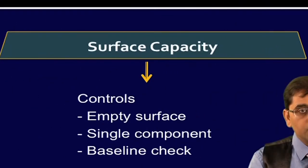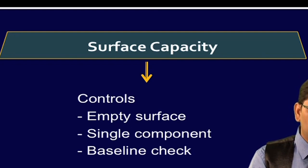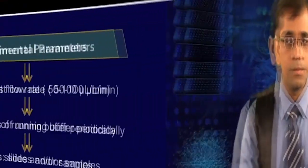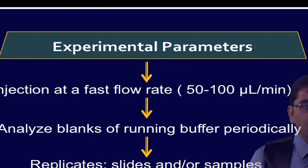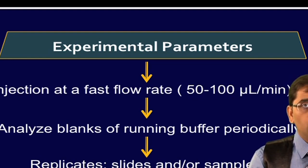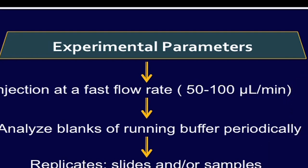Surface capacity is another important consideration: what kind of controls need to be used, what reference empty surface needs to be used, and single-component binding and baseline checks — all of these are important points to consider. Low ligand surface capacity is preferable in many cases, which can help in minimizing issues such as mass transport, aggregation, and steric hindrance. There are various experimental parameters to consider, such as how fast or slow the injection rate should be. Ideally, a fast flow rate can minimize mass transport effects. Analyzing blanks of running buffer periodically is critical to ensure reliable results and a stable baseline. It is also always judicious to reproduce experiments on independent slides and independent samples.